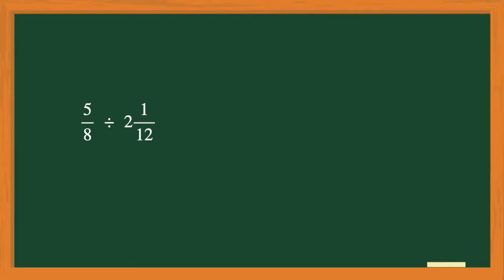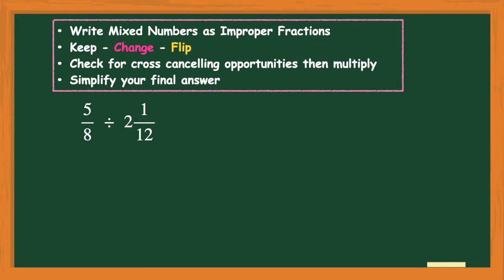Our first practice problem is 5/8 divided by 2 and 1/12. We'll use the four easy steps from the first video lesson. I have a mixed number of 2 and 1/12 in this division problem, and I can only divide a fraction with another fraction, so I'm going to have to convert 2 and 1/12 into an improper fraction before I can divide.